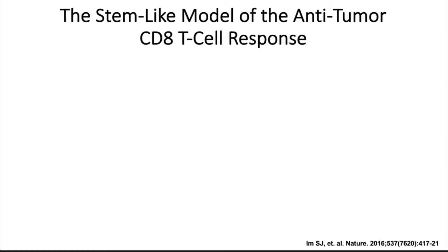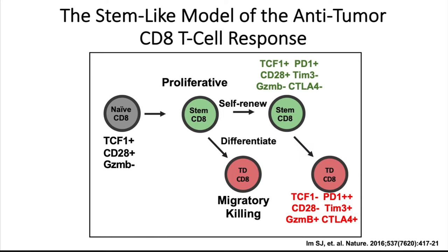To answer this question, we must build upon the work of others in the field who have defined the stem-like model of the T-cell response in numerous mouse models. In this model, there's a stem-like CD8 T-cell, which is defined by high expression of CD28 and the transcription factor TCF1, and low expression of checkpoint and effector molecules. This stem-like CD8 T-cell can both self-renew and differentiate into terminally differentiated cells, which lack expression of TCF1 and have high expression of checkpoint and effector molecules like granzymes and perforin.